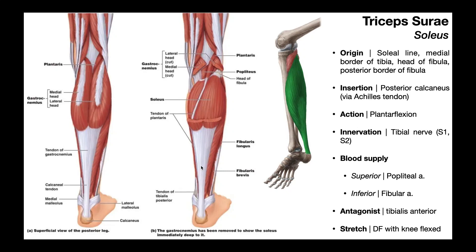Does the soleus cross two joints? No — it crosses the ankle joint, but it doesn't cross the knee joint because it doesn't originate off of the femur. Its origins are on the tibia and fibula, so the soleus, unlike the gastroc, is a one-joint muscle. It only facilitates plantarflexion — and while it also gives a little bit of subtalar inversion, the major action is plantarflexion. Because the soleus does not cross the knee joint, it has no actions at the knee joint.